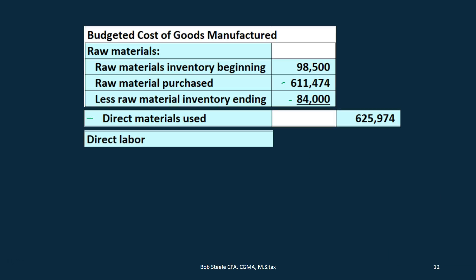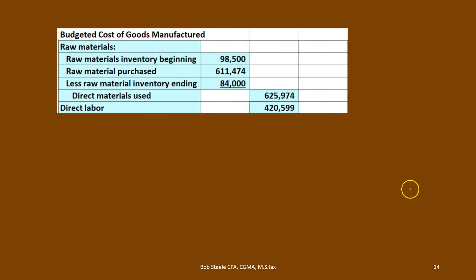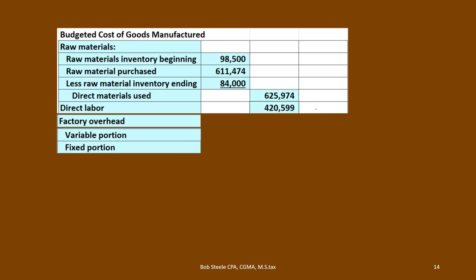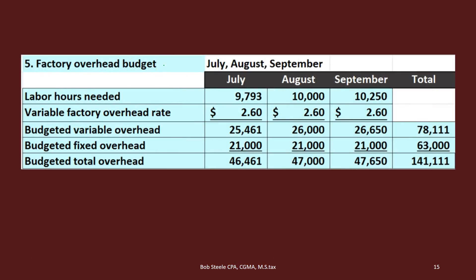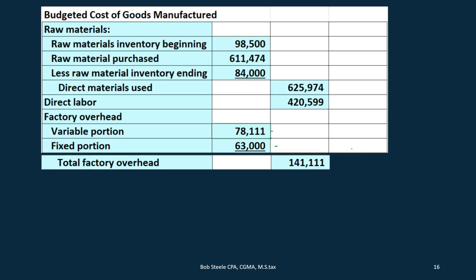Then we're going to take a look at direct labor — it's a bit more straightforward. We jump back to step four, the direct labor budget, and take the total for the quarter: $425,99. That will be the direct labor number. Next we have the factory overhead, with a variable portion and a fixed portion. Jumping back to the factory overhead budget in step five, we have the variable portion of $78,111 and the fixed portion of $63,000, giving us total factory overhead of $141,111.